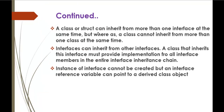A class or struct can inherit from more than one interface at the same time, but a class cannot inherit from more than one class at the same time — that is what we saw in the example. Additionally, interfaces can inherit from other interfaces. A class that inherits such an interface must provide implementation for all interface members in the entire interface inheritance chain.